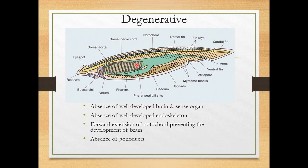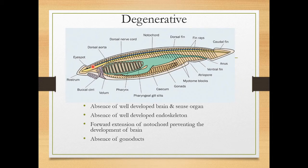Amphioxus also has certain degenerative features. There is absence of a well-developed brain and sense organs — no specialized brain or sense organs. There is absence of a well-developed endoskeleton; the notochord is not strongly developed. The forward extension of the notochord prevents the development of a brain. There is also absence of gonoducts — no vas deferens or similar structures.